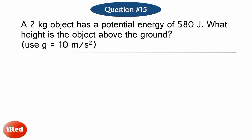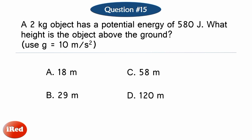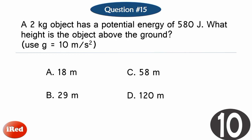Number 15. A 2-kilogram object has a potential energy of 580 joules. What height is the object above the ground? Use 10 meters per second squared as the value of acceleration due to gravity. Letter A, 18 meters. Letter B, 29 meters. Letter C, 58 meters. Or Letter D, 120 meters.